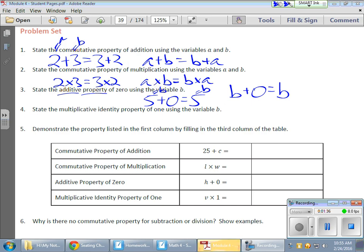And the same thing for the identity property of multiplication or the multiplicative identity property, which states that any number, let's take 5 again, times 1 is going to give me that 5 again. And if I'm going to replace that number with a variable, let's say b, the same thing is true. So b times 1 would therefore give me b.